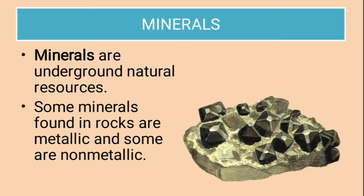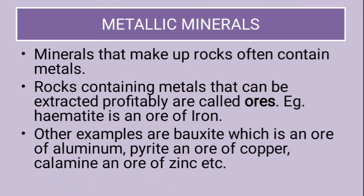Then comes minerals. Minerals are underground natural resources. Some minerals found in rocks are metallic and some are non-metallic. Minerals that make up rocks often contain metals. Rocks that contain metals that can be extracted profitably are called ores. For example, hematite is an ore of iron, bauxite is an ore of aluminium, pyrite is an ore of copper, and calamine is an ore of zinc.